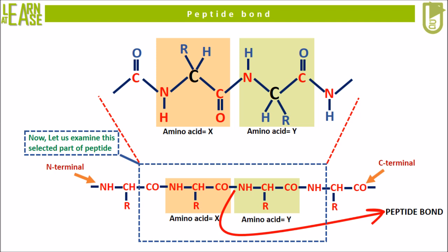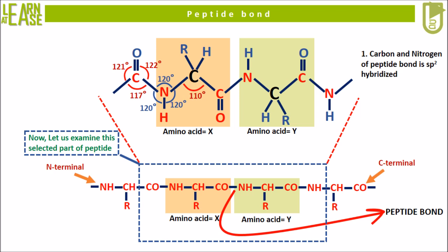The orientation of the amide nitrogen participating in the peptide bond forms all covalent bonds with a bond angle of 120 degrees. The bond angle around the alpha carbon of any amino acid is 110 degrees. The bond angle around the carbonyl carbon participating in the peptide bond is also 120 degrees. In short, all bond angles around the carbon and nitrogen involved in the peptide bond are close to 120 degrees.